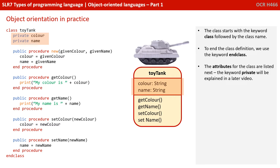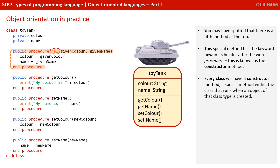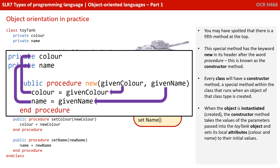We then see the attributes for the class are listed. The keyword private is important, but we'll explain that in a later video. We can see the four methods for the toy tank class: two for getting the tank's colour and name, and two for setting the tank's colour and name. You may also have spotted a fifth method at the top. This special method has the keyword new in its header after the word procedure — this is known as the constructor method. Every class will have a constructor method, and this is a special method that runs when an object of that class type is first created or instantiated. When the object is instantiated, the constructor method fires off, takes the values of the parameters passed in, and sets its local attributes — colour and name — to their initial starting values.